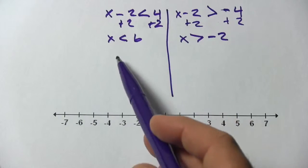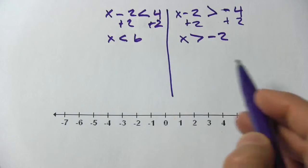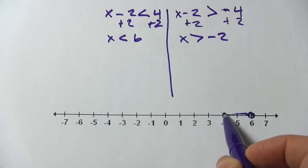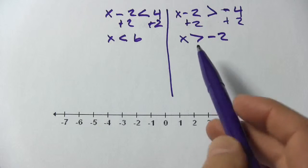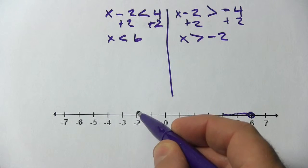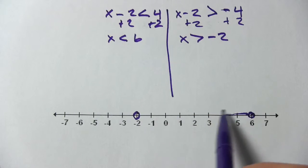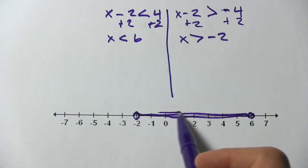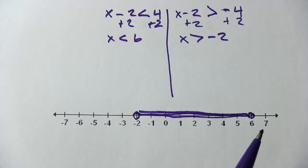So we are graphing these two parts. x is less than 6, so that's going to be an open circle at 6, and then an arrow that goes this way. I'm not going to draw it all in, though. And then x is greater than negative 2, so again, an open circle here, and an arrow that goes this way. So the part that's the solution is where they overlap in here.